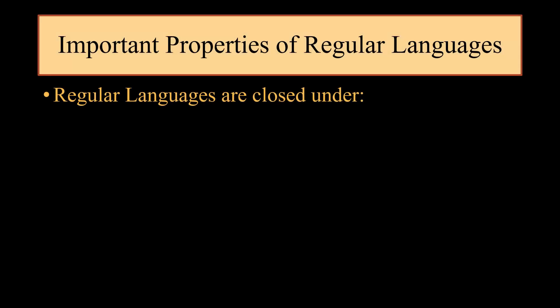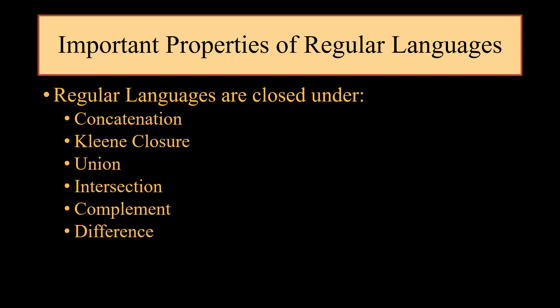We have discussed important properties of regular languages in the previous slides. Just a brief brush up: regular languages are closed under concatenation, Kleene closure, union, intersection, complement, and difference.